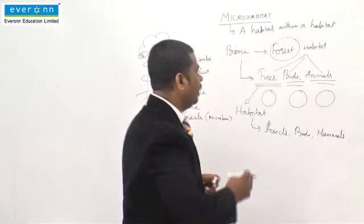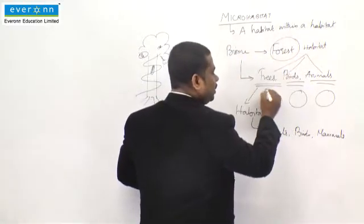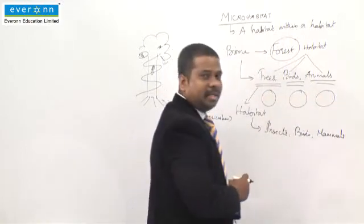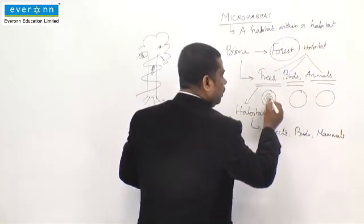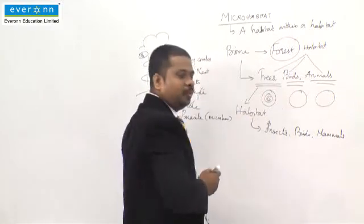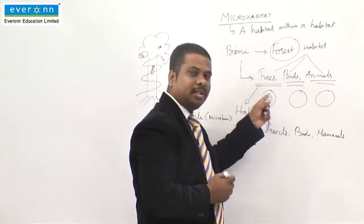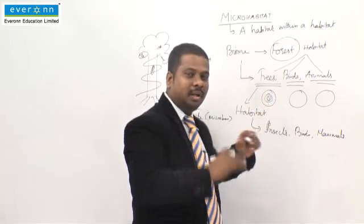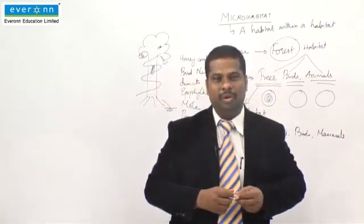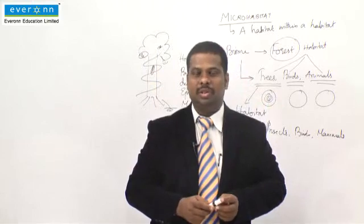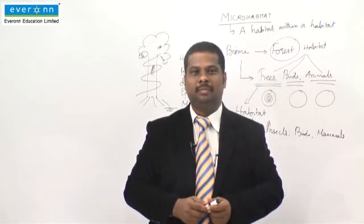Now you understand — when you say a habitat within a habitat, it is not set aside separately, but you may have a habitat, a smaller habitat, a still smaller habitat — and that is the way life is going on in an ecosystem. So this is about microhabitat. Thank you.